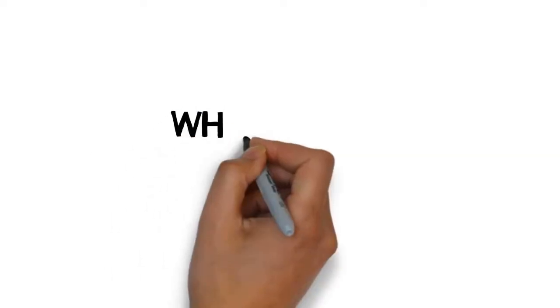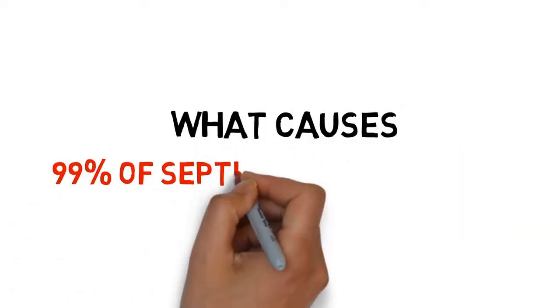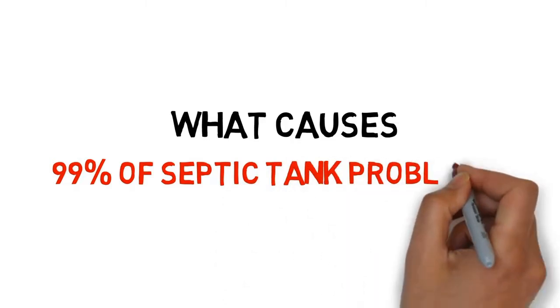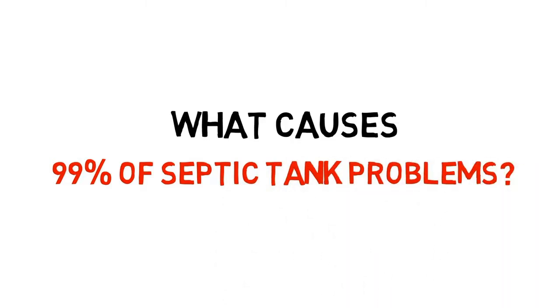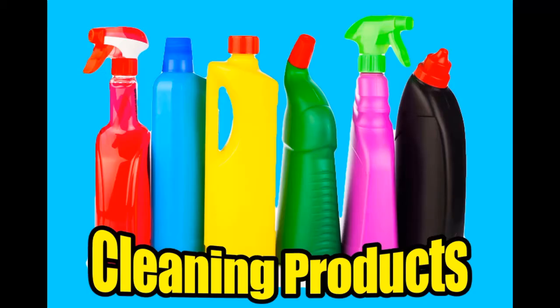So what goes wrong? What causes 99% of all septic tank and soak away problems? Cleaning products. Cleaning products such as bleach, washing powder, dishwasher tablets, and toilet cleaners kill septic tanks and have become the number one leading cause of all septic tank and soak away problems. Let me explain why.